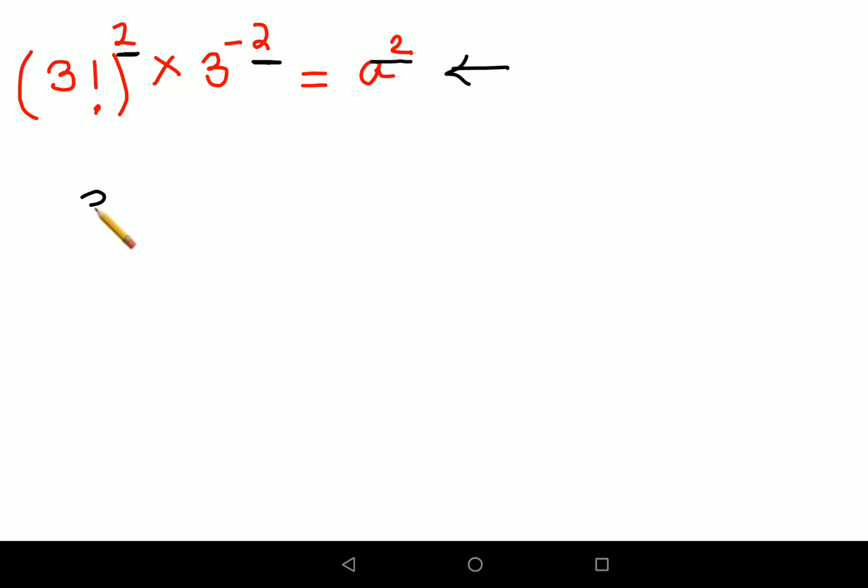Let me write it down again. So we have 3 factorial the whole square into 3 raised to minus 2 equals to a square. So now what you should do: taking square roots on both sides.